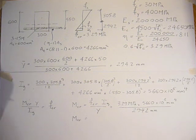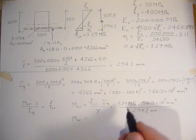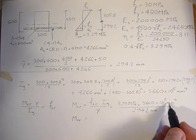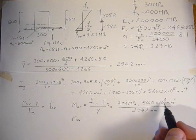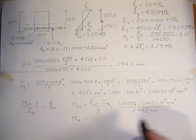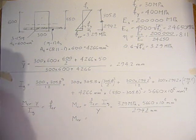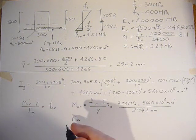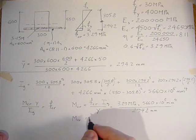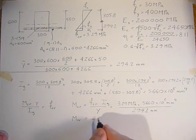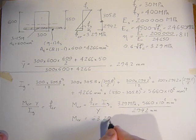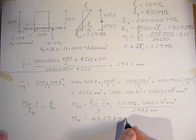Cracking moment is 3.29 MPa times 5,660 times 10^6 divided by 294.2. That's in newton millimeters. MPa is newtons per millimeter squared, times millimeters to the fourth, divided by millimeters gives newton millimeters. Converting to kilonewton meters, the cracking moment is 63.29 kilonewton meters.